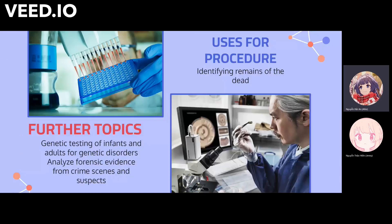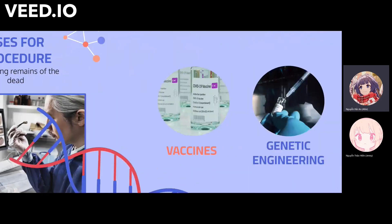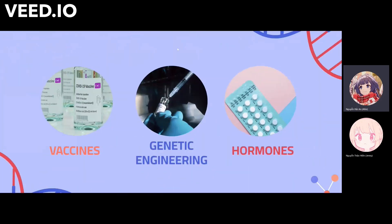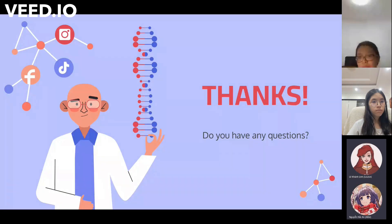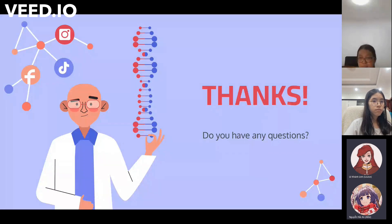There are also other topics related to DNA, such as genetic testing of infants and adults for genetic disorders. Another application is analyzing and using fingerprints as evidence for crime scenes and suspects. There are also uses like identifying remains of the dead, and other related topics we find interesting such as vaccines, genetic engineering, and hormones. This is the end of our presentation, and we hope you enjoyed and found it helpful, as well as learned something new. Thank you for listening, and see you next time.